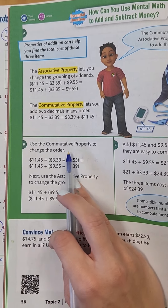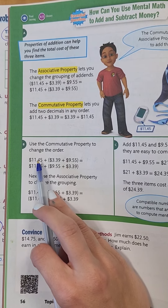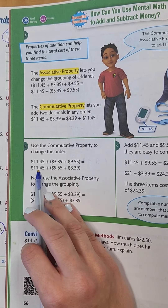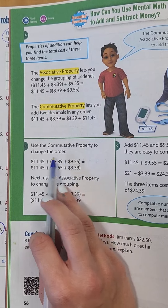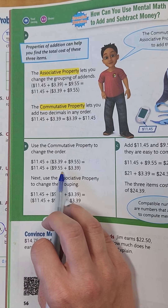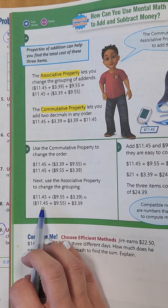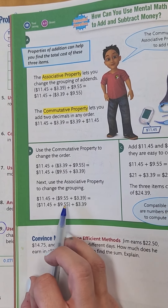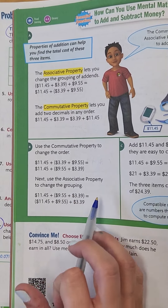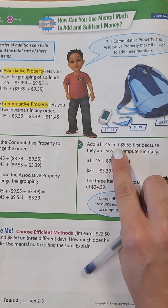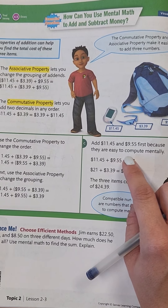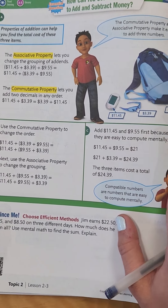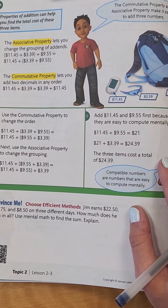If we use the commutative property to change the order, in this example we have $11.45, but they moved these two numbers in parentheses around to make it easier. Then you reassociate $11.45 and $9.55 and add those first, because two fives together are normally easier to add than a five and a nine. So you add those two first because they are easier to compute mentally, and then find the total cost.